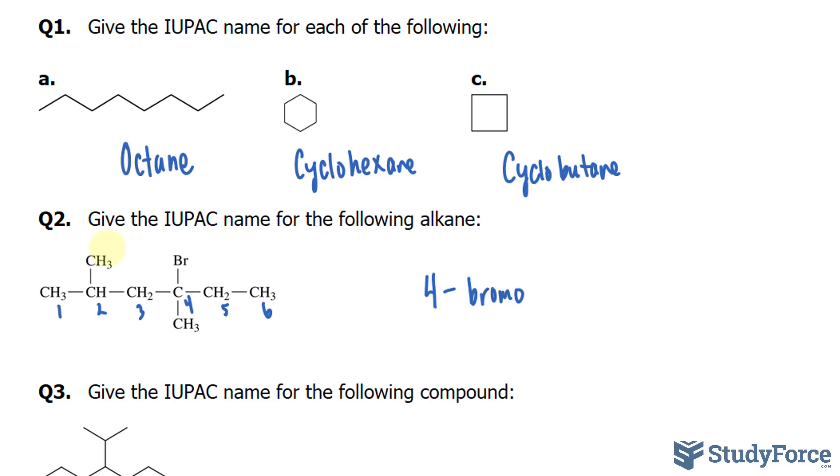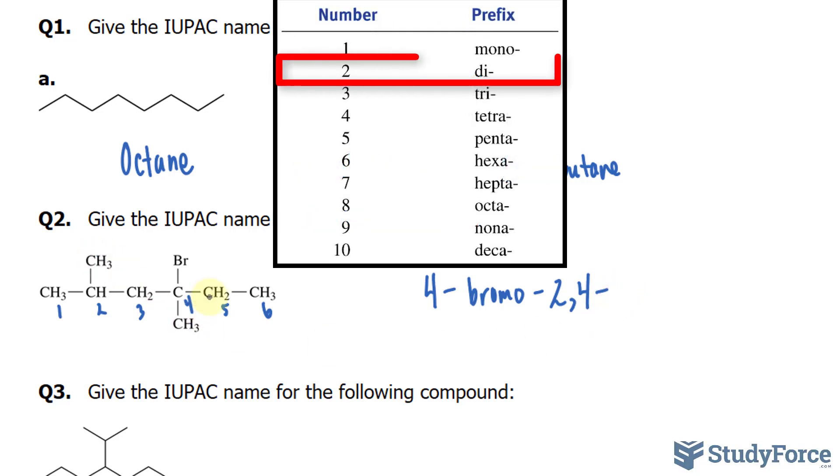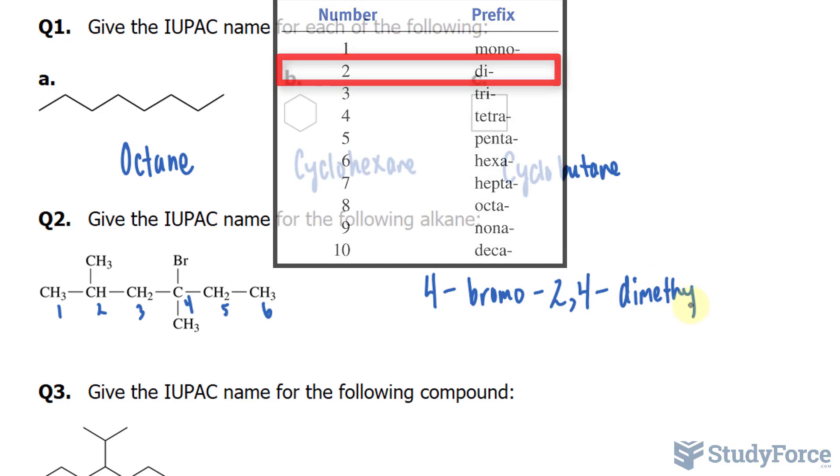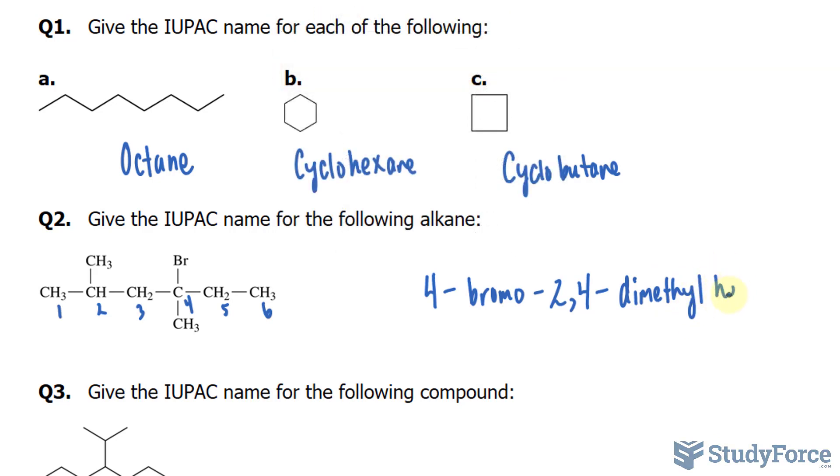And we also have these two methyl groups, which we also hyphenate. They are located in the 2 and fourth position. So 2, 4, hyphen. And since we have two of them, we say dimethylhexane. That's the answer to question 2. Let's move on to question 3.